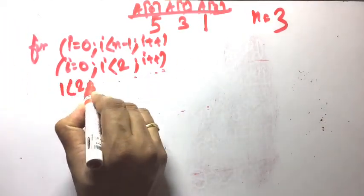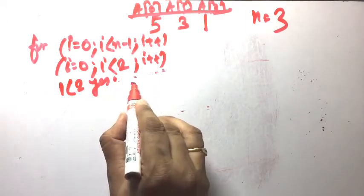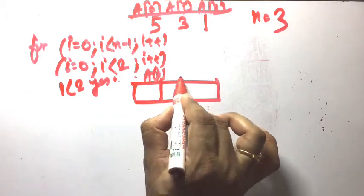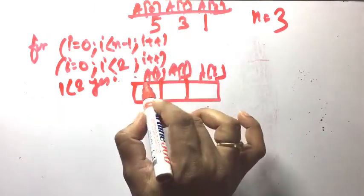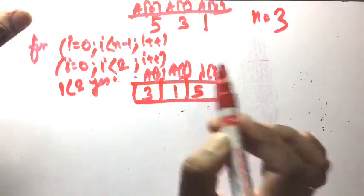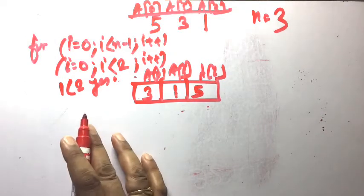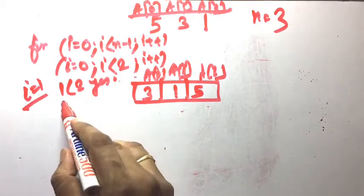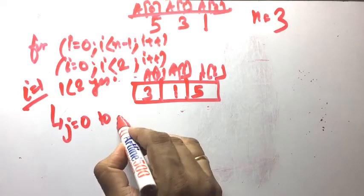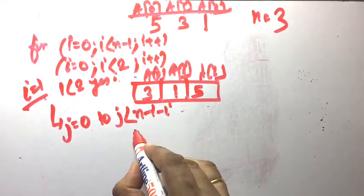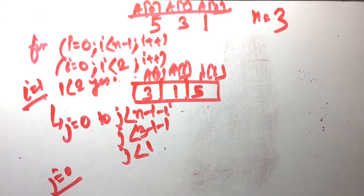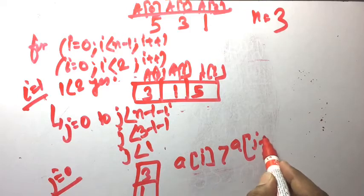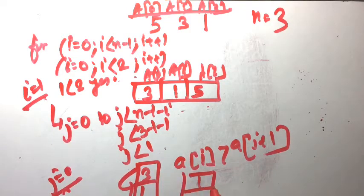Now i is incremented to 1. 1 less than 2, yes. j starts again from 0. j less than n minus 1 minus i: 3 minus 1 minus 1 equals 1, so j less than 1. Comparing 3, 1, 5: a[0] equals 3, a[1] equals 1 — 3 greater than 1, yes, so swapping is done: result is 1, 3, 5. Now j is incremented to 1, 1 less than 1 is false, so loop ends.